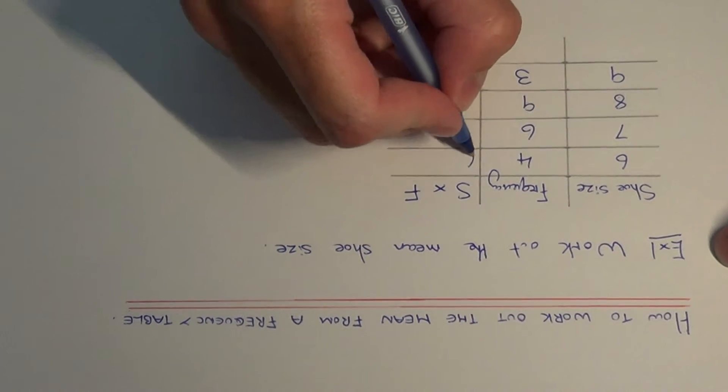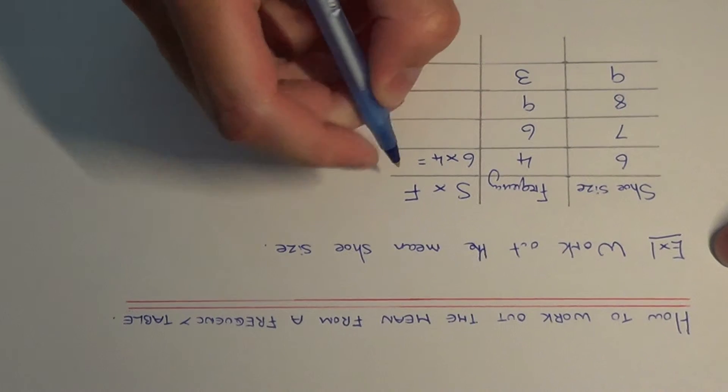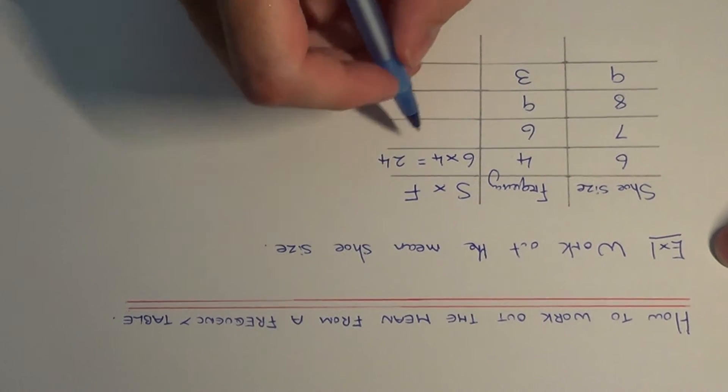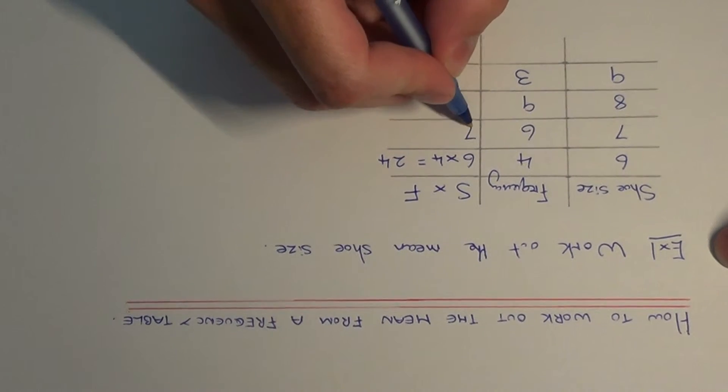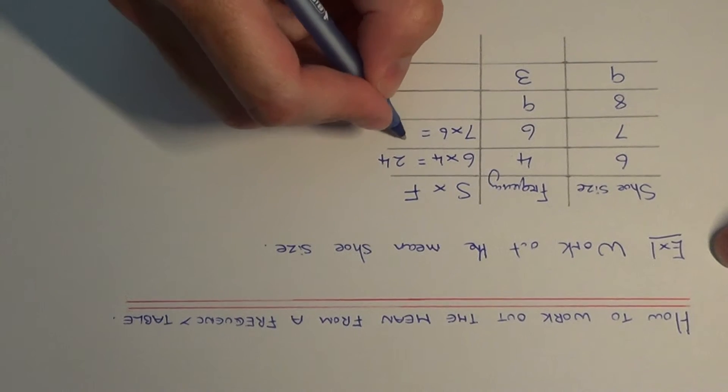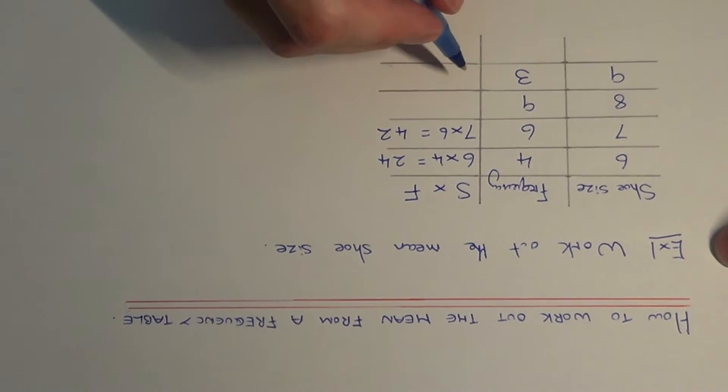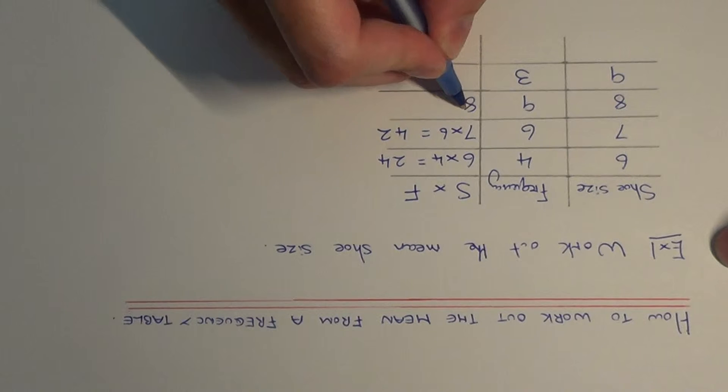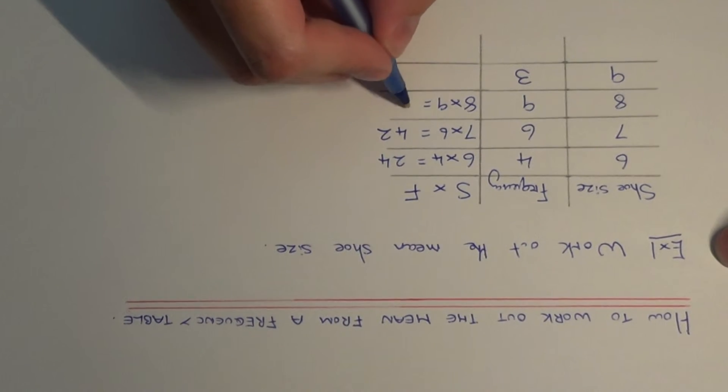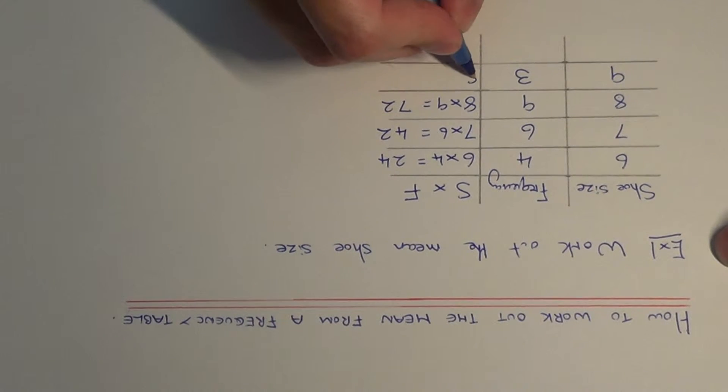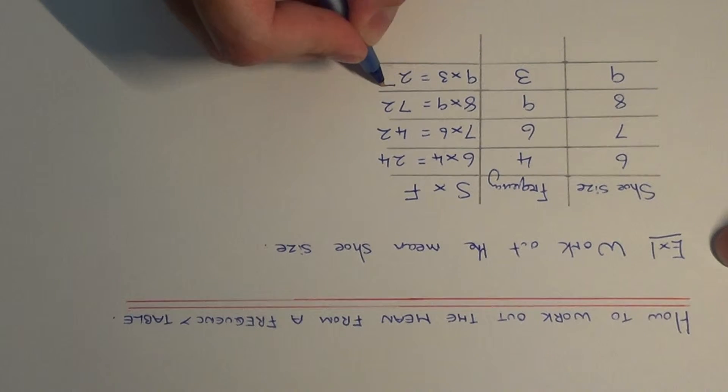So we do six multiplied by four which is 24. Next one will be seven times six is 42. Next one will be eight times nine is 72, and nine times three which is 27.